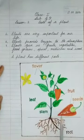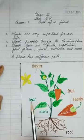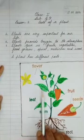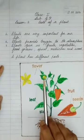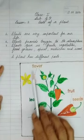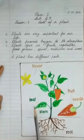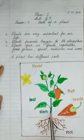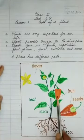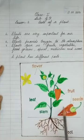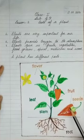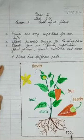This is a picture of a plant and you can see different parts of the plant. These are flowers. These are leaves. This is a stem. These are fruits. These are seeds which are found inside the fruit. These are roots which are under the ground.